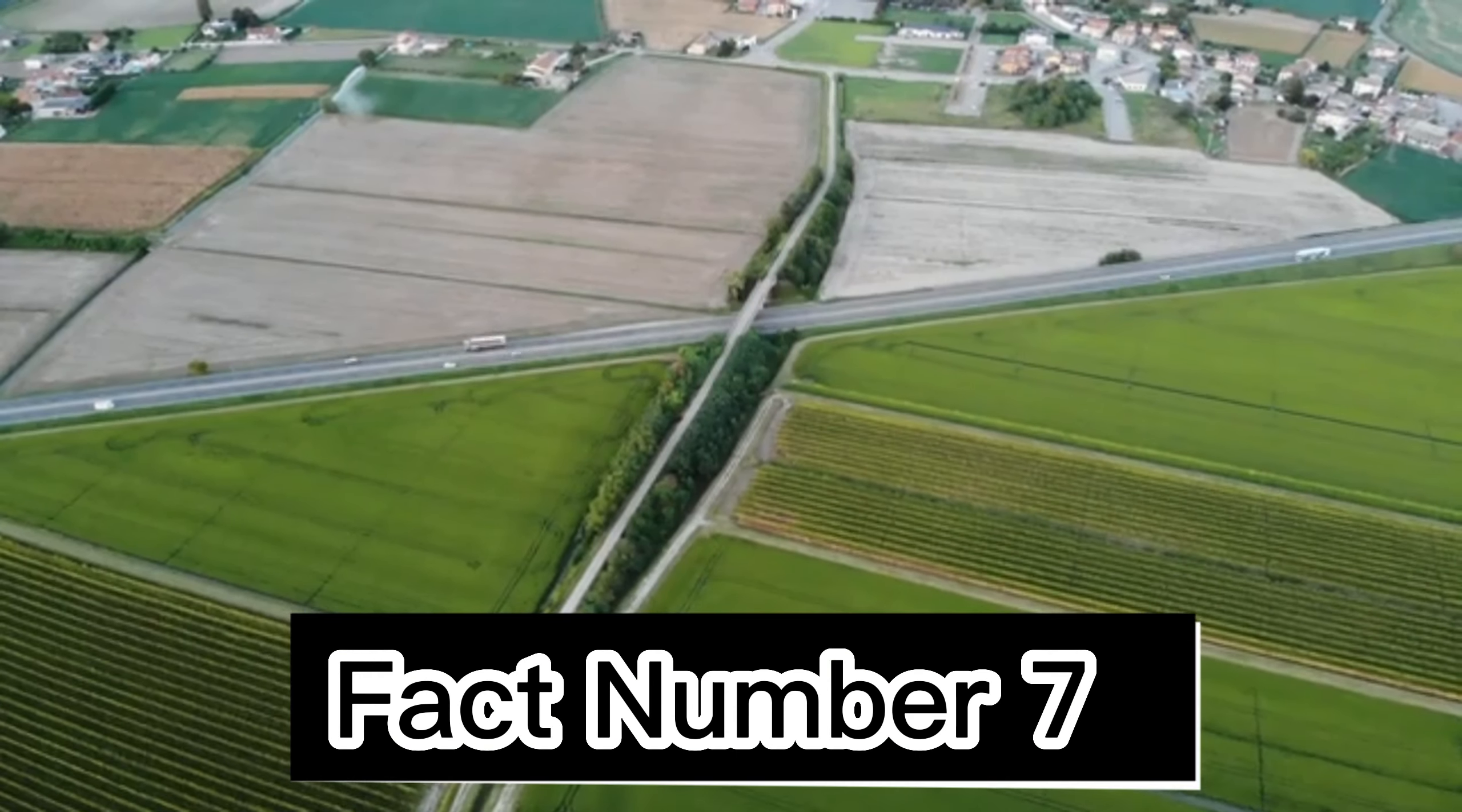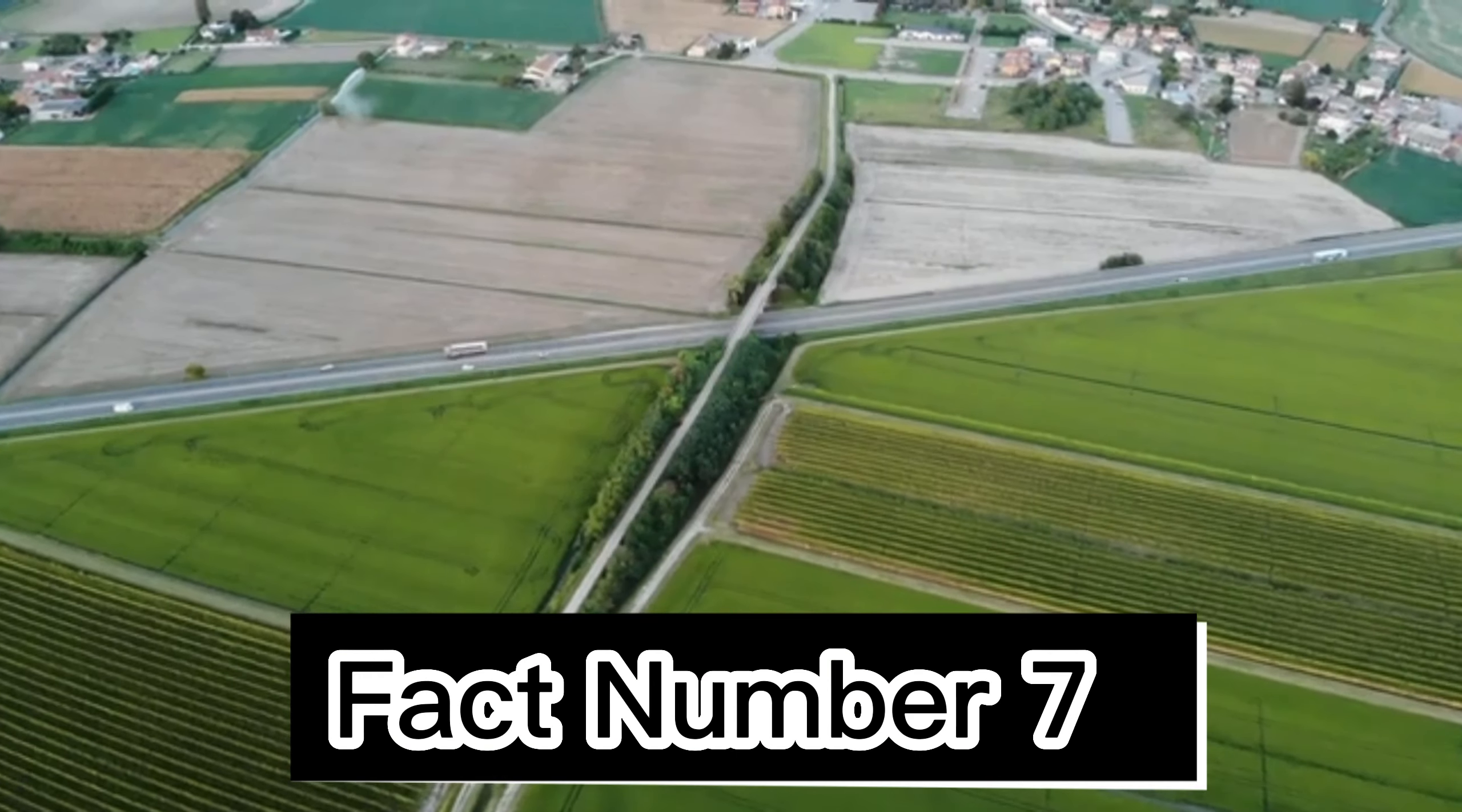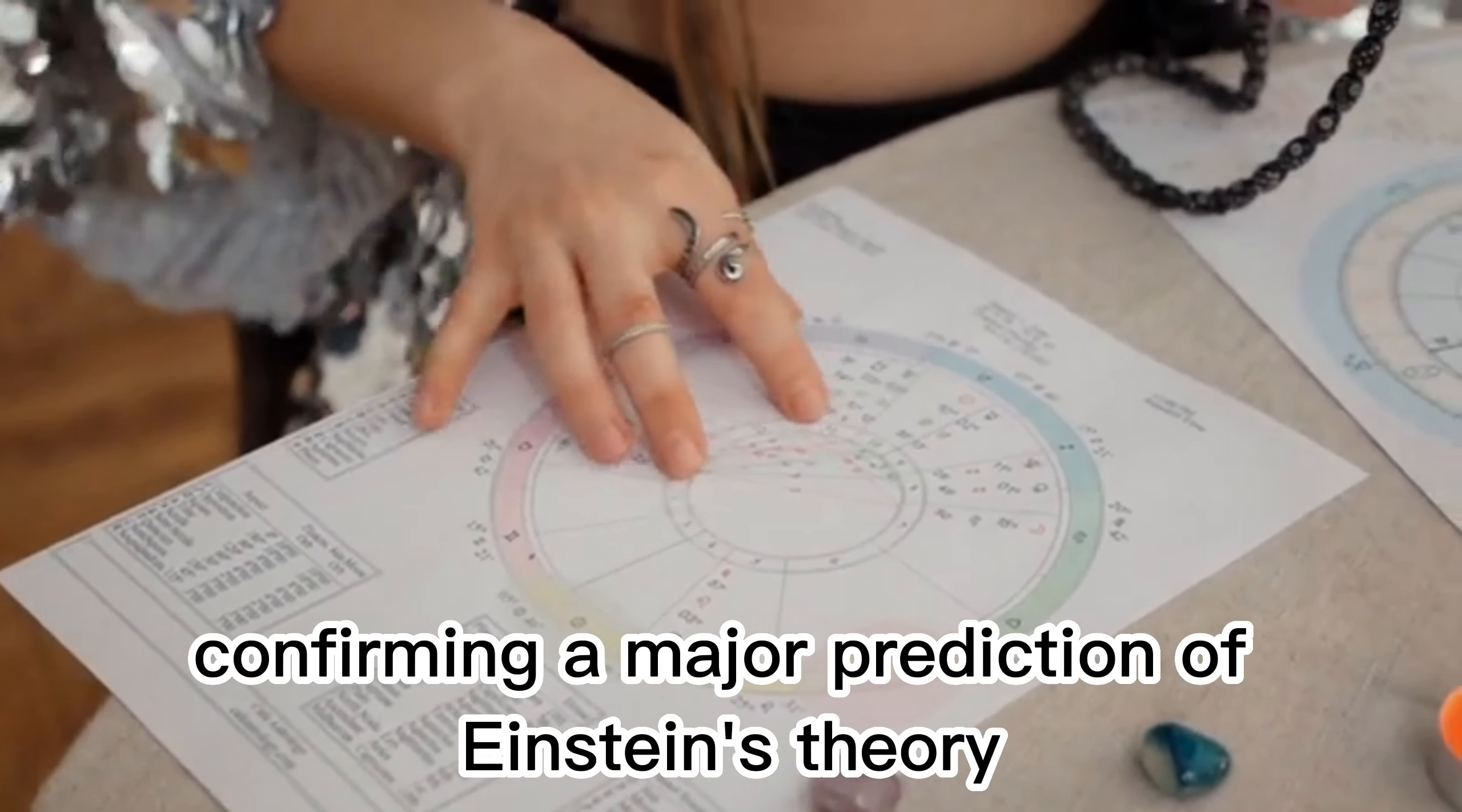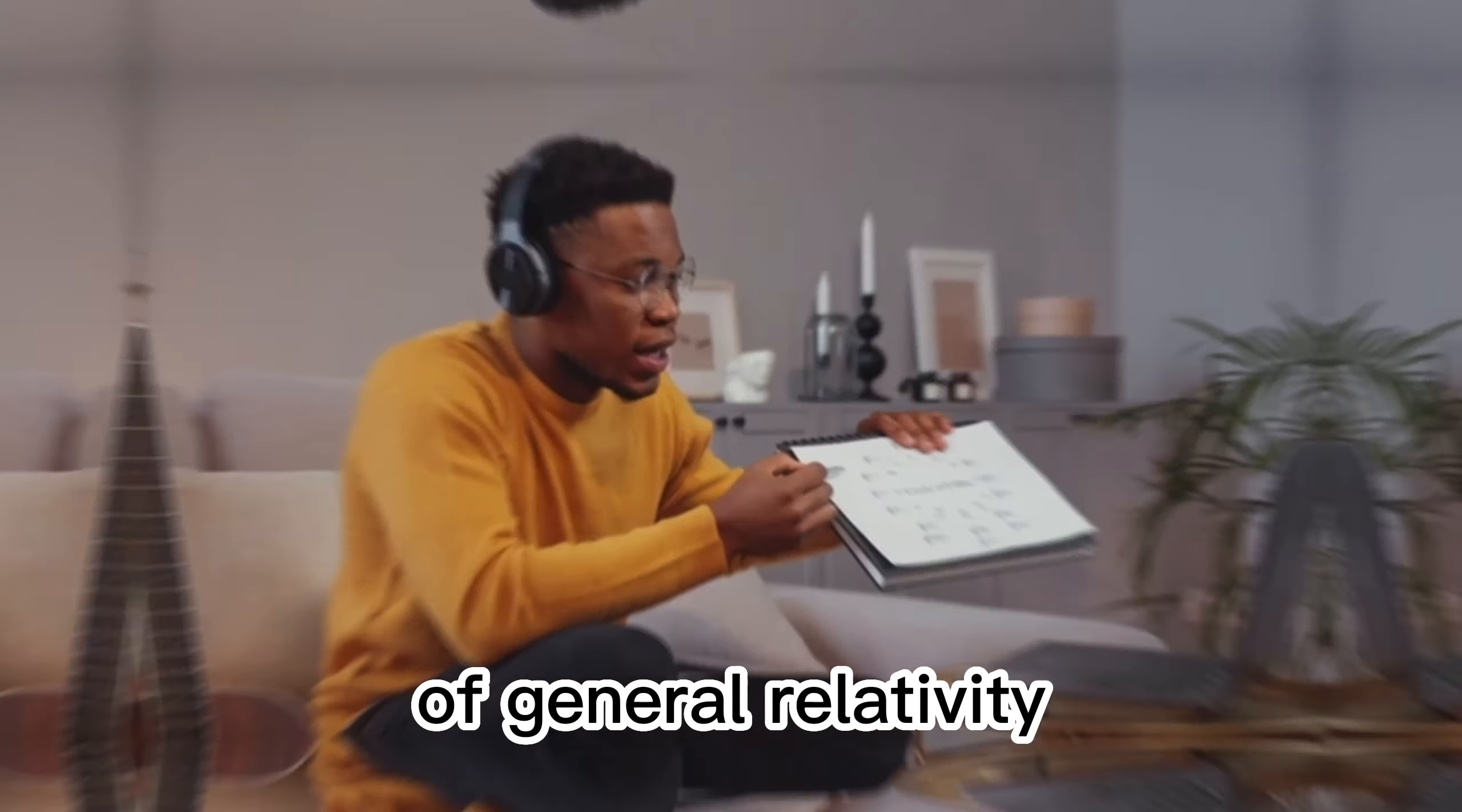Fact number 7. Gravitational waves, ripples in the fabric of spacetime, were first detected in 2015, confirming a major prediction of Einstein's theory of general relativity.